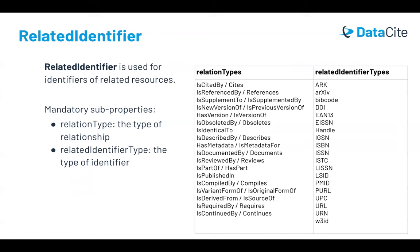The last recommended property we'll look at in this video is related identifier. Related identifier is used for identifiers of related resources. There are two mandatory subproperties for related identifier. There's the relation type, which indicates the type of relationship — for example, that the DOI is cited by the related resource or that it cites the related resource. Relation types can also represent versioning, whole-part relationships, and other specific types of relationships. There's also the related identifier type, which is for the type of identifier itself, which could be a DOI or a URL, for example.